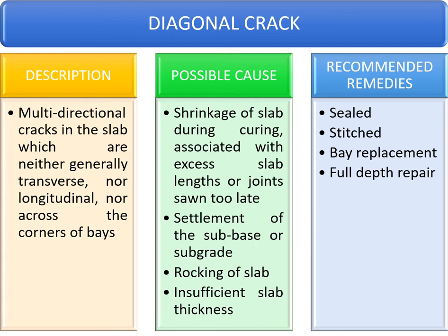The recommended remedies for diagonal cracks are: narrow cracks in unreinforced slabs and medium cracks in all slabs need to be sealed properly the moment they are observed. Even narrow cracks must be attended to, because if left unattended they will lead to disastrous pavement conditions. Wide cracks will necessitate either a bay replacement repair or a full depth repair — so there are three conditions of repair: sealing, stitching, and replacement.